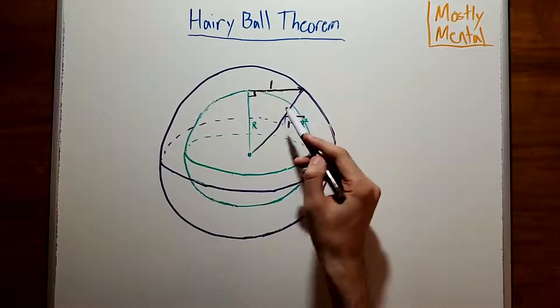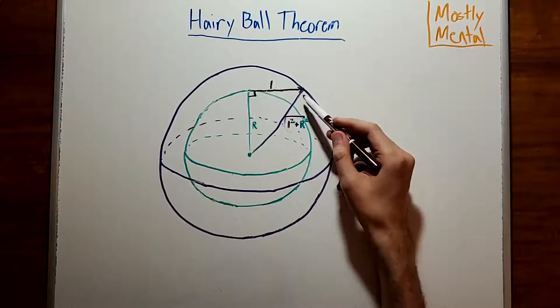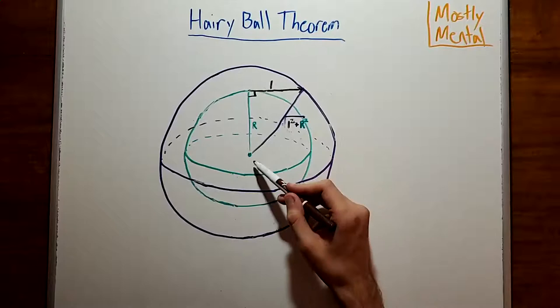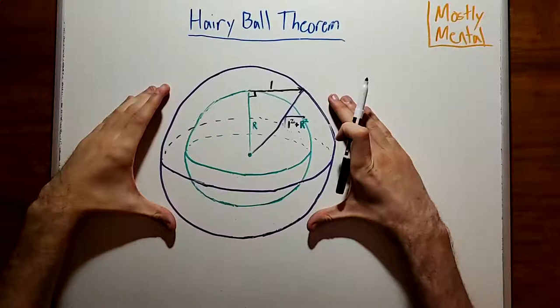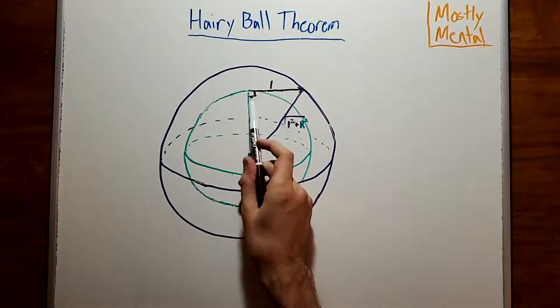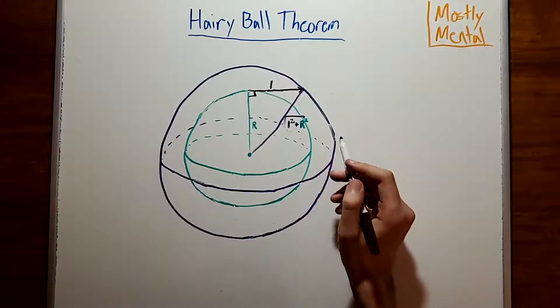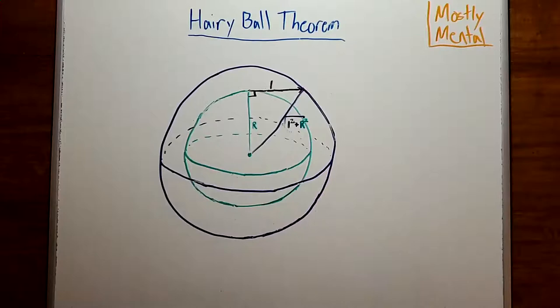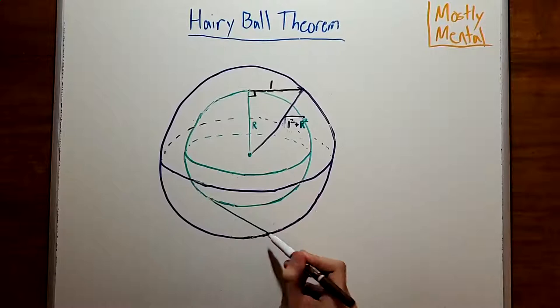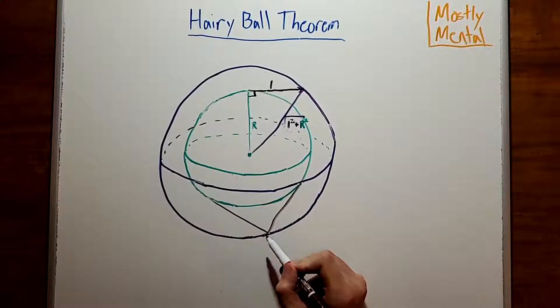In fact, since all our vectors are the same length, and each is perpendicular to the radius, by the Pythagorean theorem, all of the endpoints must be the same distance from the center. Which means they all lie on a larger sphere. It would be really nice if the vectors gave us a one-to-one correspondence between points on the two spheres, since then we could use the properties of the big sphere to tell us about the little one. Unfortunately, we don't quite get that.